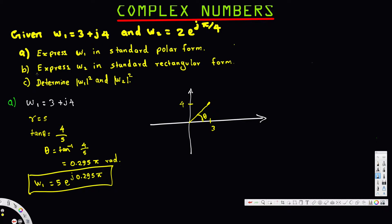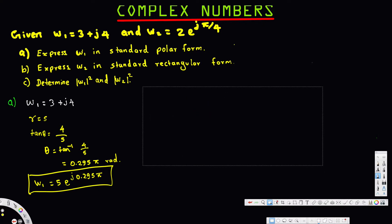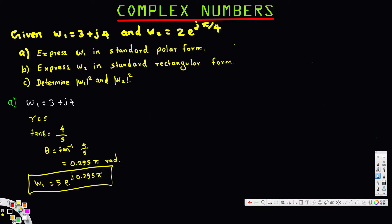Now for part B, we need to express w2 in standard rectangular form — the opposite conversion. We have w2 equal to 2 e to the power j5 over 4. Here the r value is equal to 2 and the angle is equal to 5 over 4.